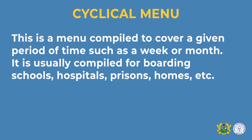A cyclical menu is a menu compiled to cover a given period of time such as a week, month, or more. This is usually compiled for homes, prisons, boarding houses, universities, etc. It is compiled to cover a period of time because of the number of people being catered for at a time.